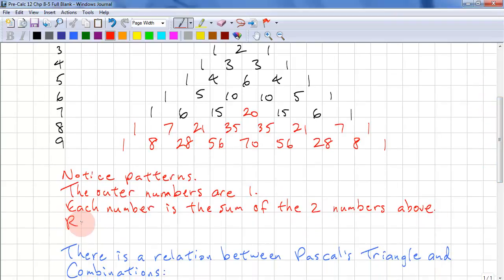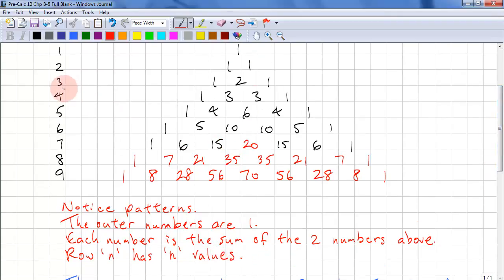We also want to note row n has n values. So row 3 has 1, 2, 3 values. Row 4 has 1, 2, 3, 4 values.